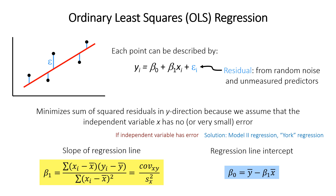Very briefly, we mentioned that we should have no or very small errors in the independent variable. If you do have error in the independent variable, you might want to look into methods called Model 2 regression, or one sometimes called York regression. I won't cover those in this video, but you can look them up if that applies to your situation.